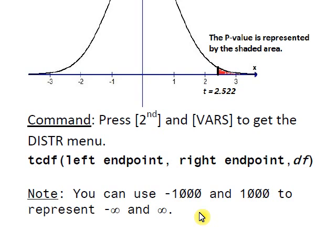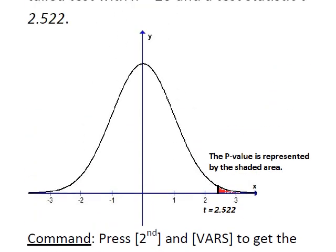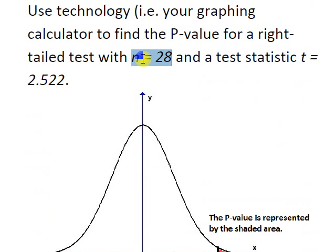Let's think about what we want to do here. Our left endpoint is 2.522. The right endpoint is 1,000, 1,000 standard deviations to the right of the mean. And let's look at the problem. The degrees of freedom will be 27 because the sample size is 28. So let's call up our calculator now.